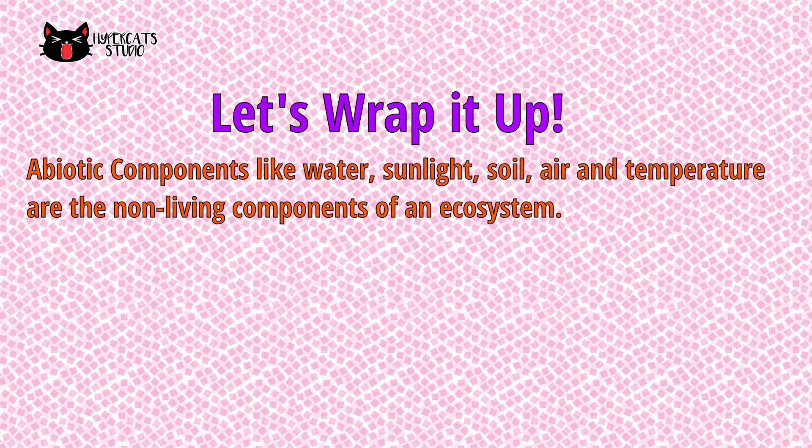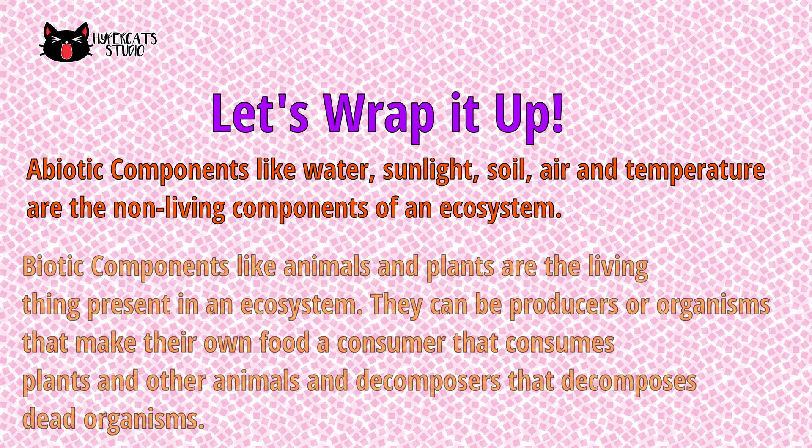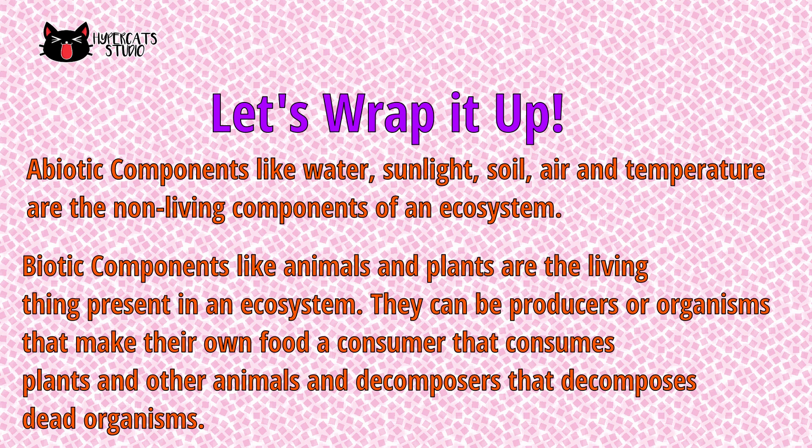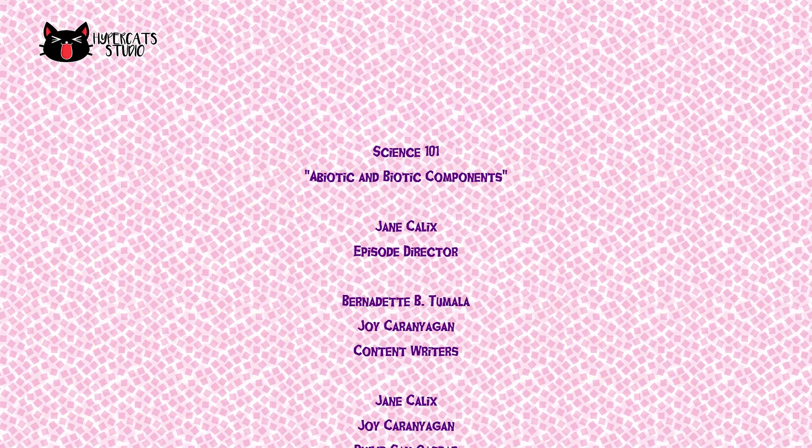Let's wrap it up. Abiotic and biotic components of an ecosystem work together to sustain life. Abiotic components like water, sunlight, soil, air and temperature are the non-living components of an ecosystem. Biotic components like animals and plants are the living things present in an ecosystem. They can be producers that make their own food, consumers that consume plants and other animals, and decomposers that decompose dead organisms.